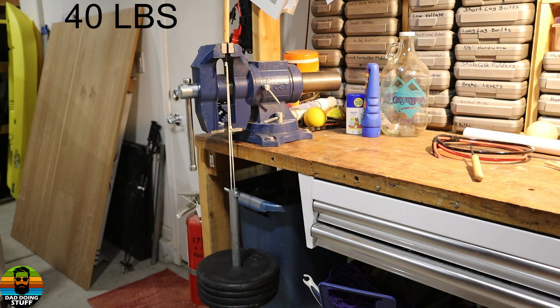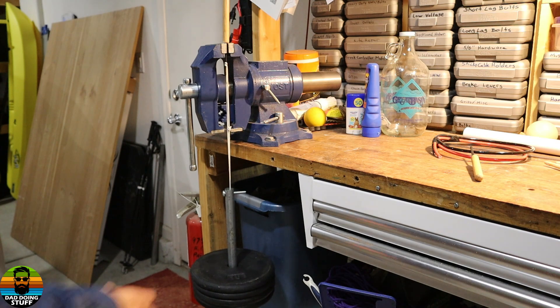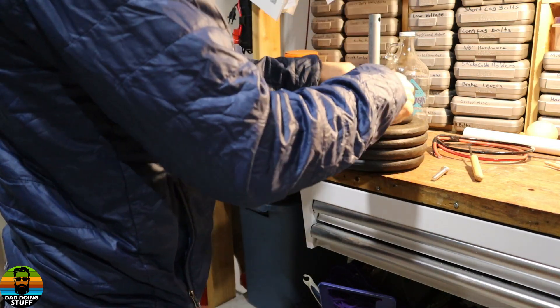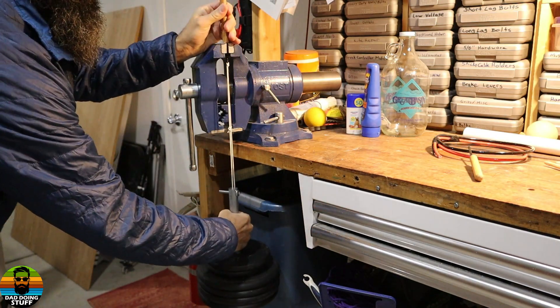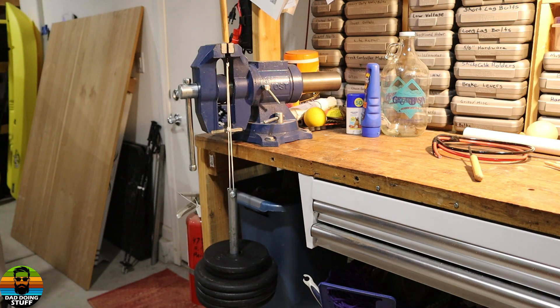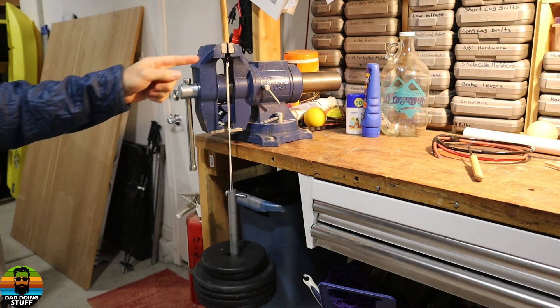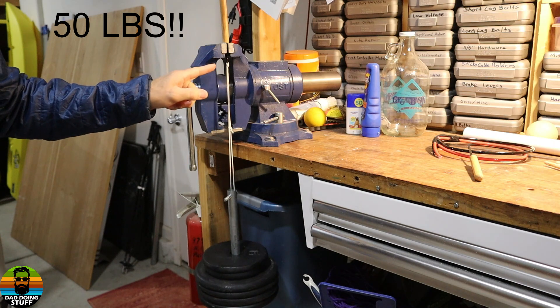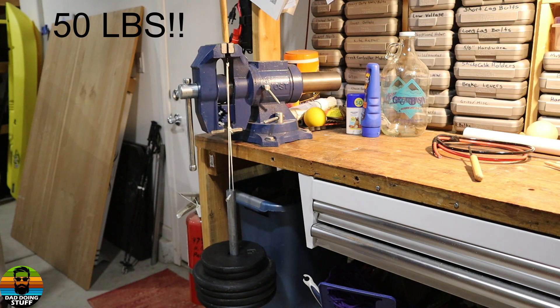All right. There's 40 pounds. So far so good. What the heck. Let's go all the way to 50. All right. That's pretty darn heavy. So now we're at 50 pounds of weight. 50 pounds of weight with nothing but baking soda and super glue holding that blade into that piece of wood. That's pretty impressive.